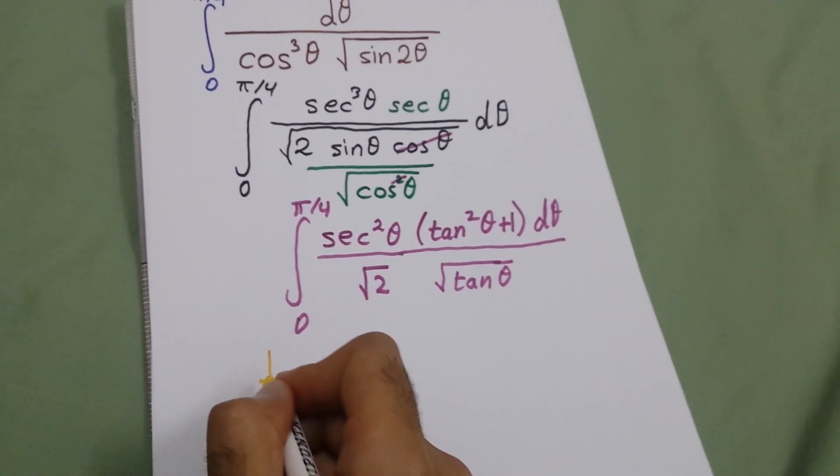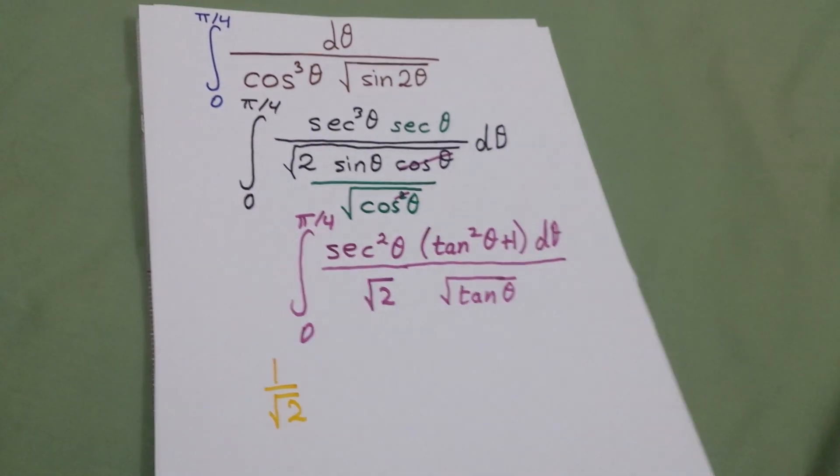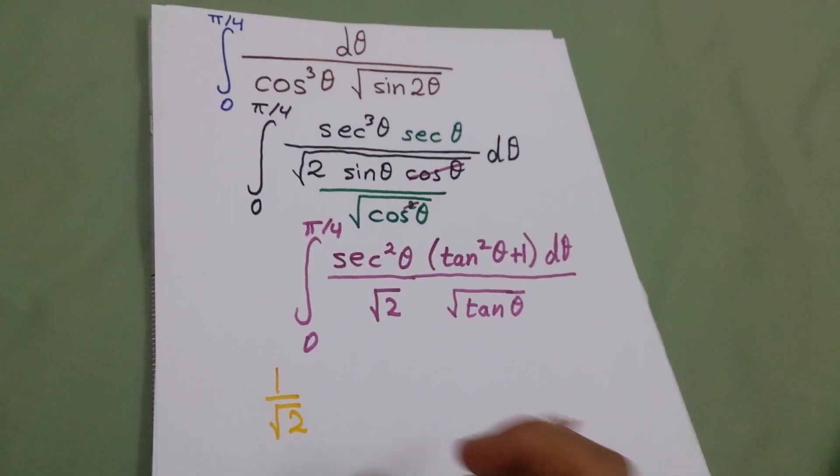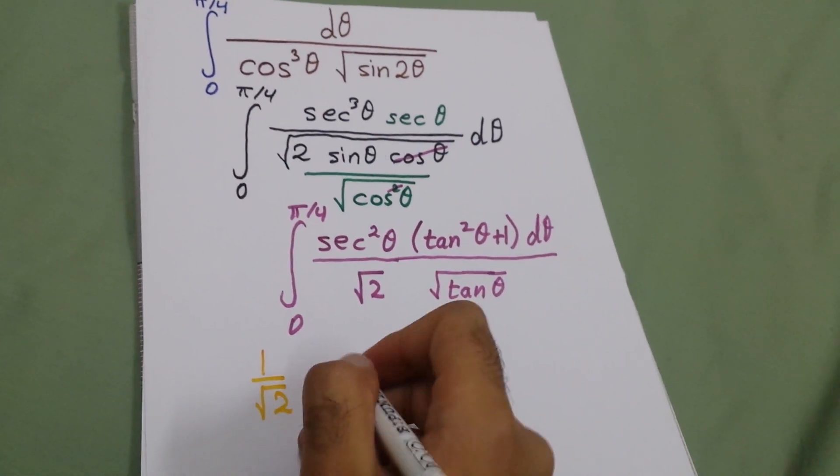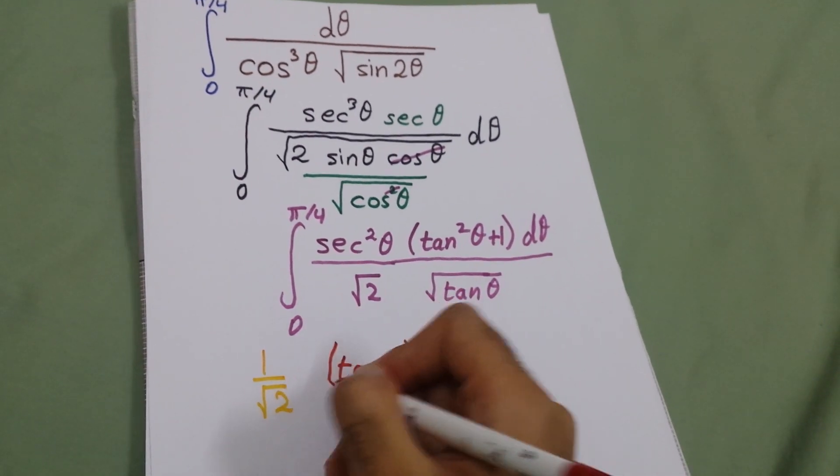It's already 1 over root 2, tan squared over square root of tan. The integration of this will be tan theta to power 5 over 2.